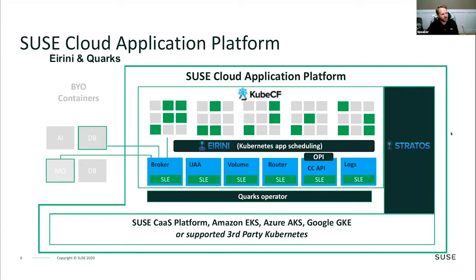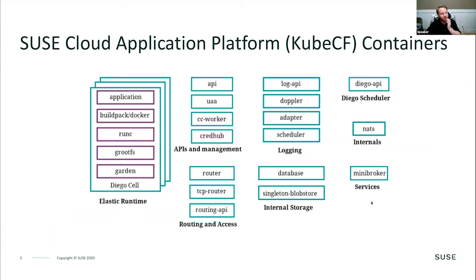This diagram explains all the containers that are part of the Cloud Application Platform, providing the runtime, routing and access, API and management infrastructure, logging, and various types of storage attachment and service attachment to your applications.